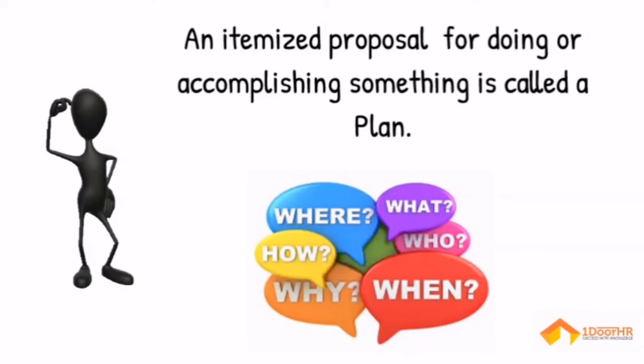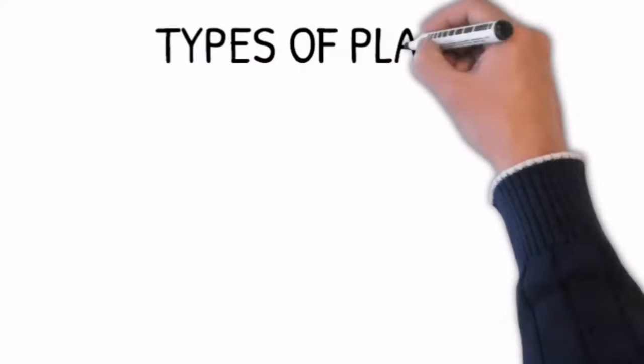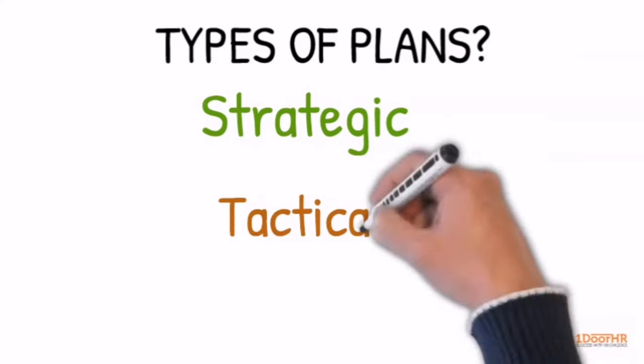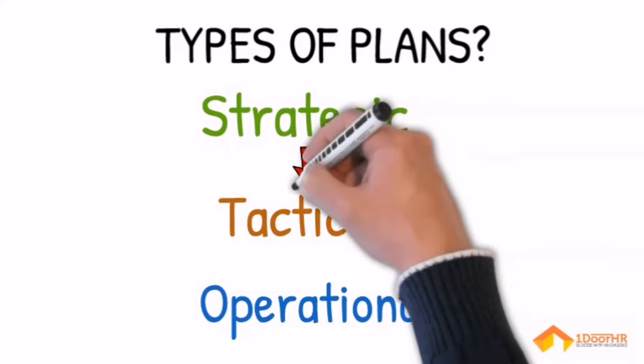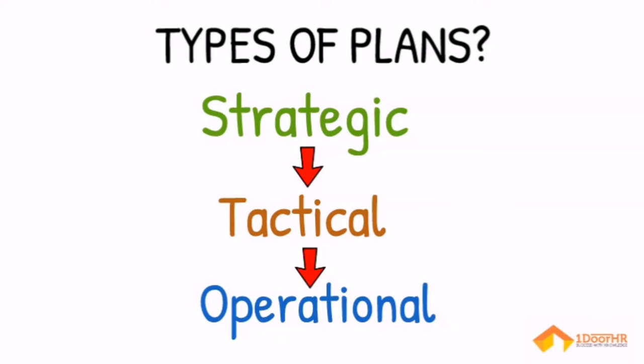There are three types of planning: strategic, tactical, and operational. Although there are three different types of plans, they are interlinked to each another and each has got its own importance.